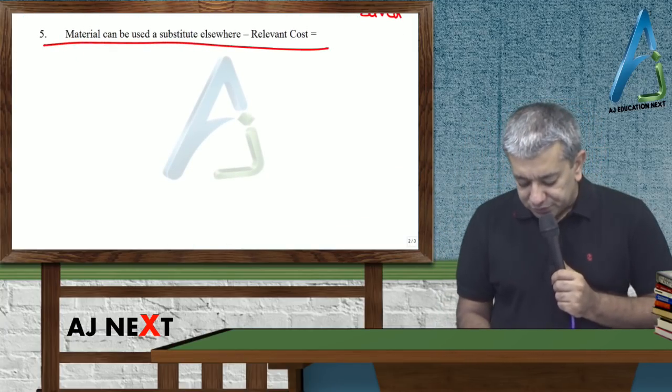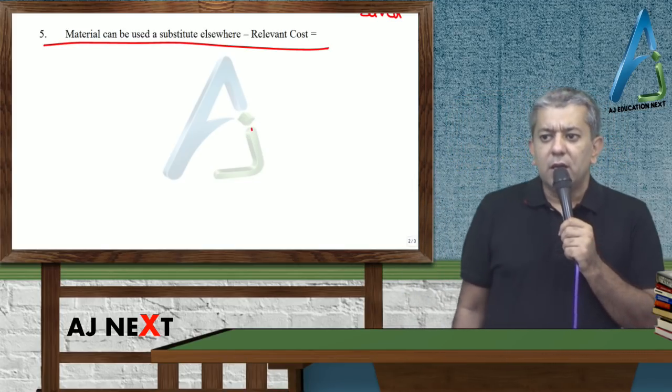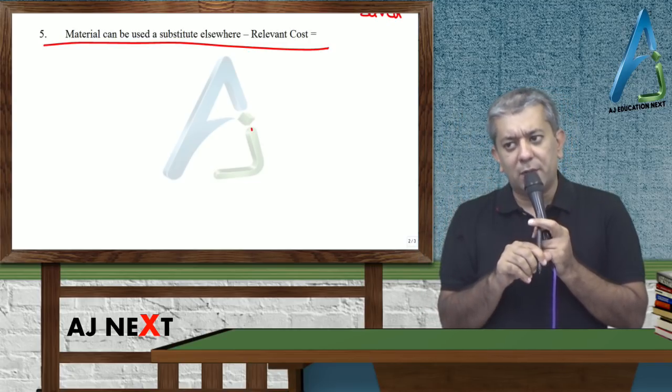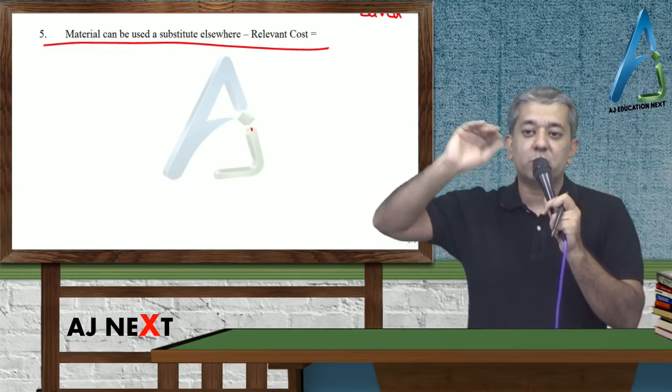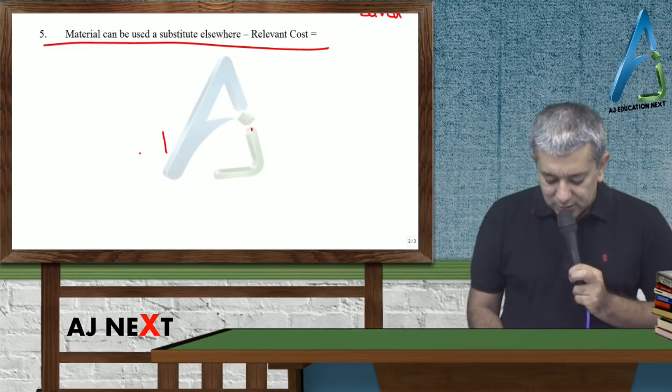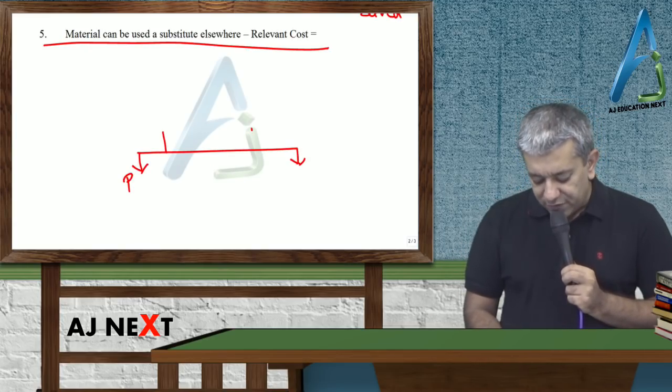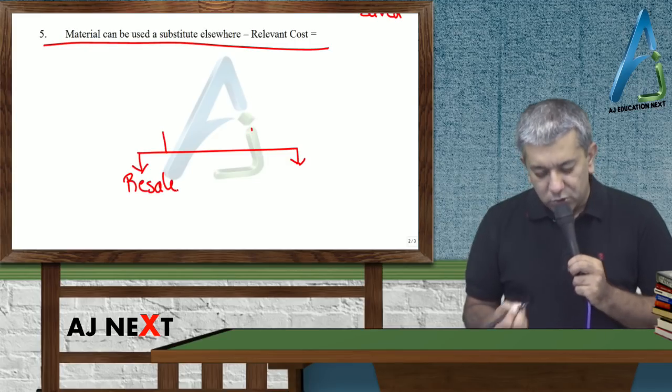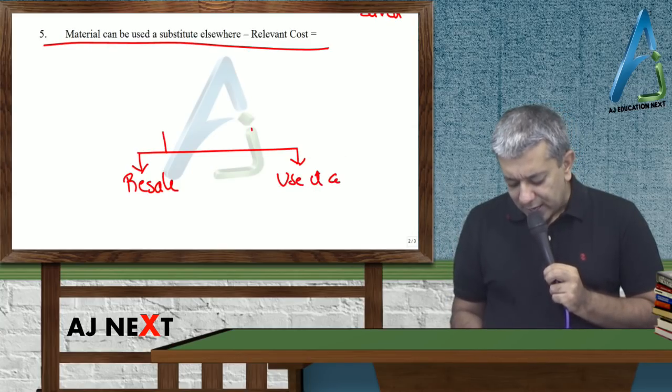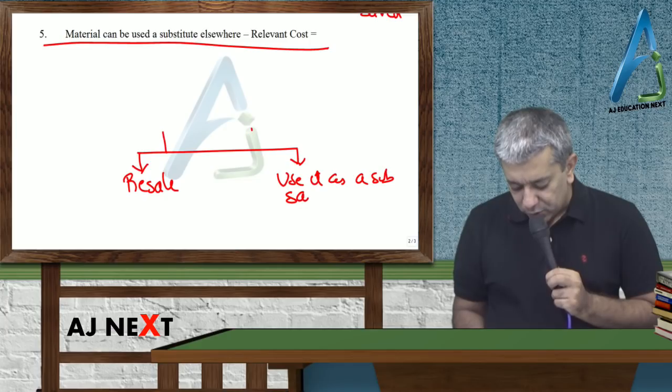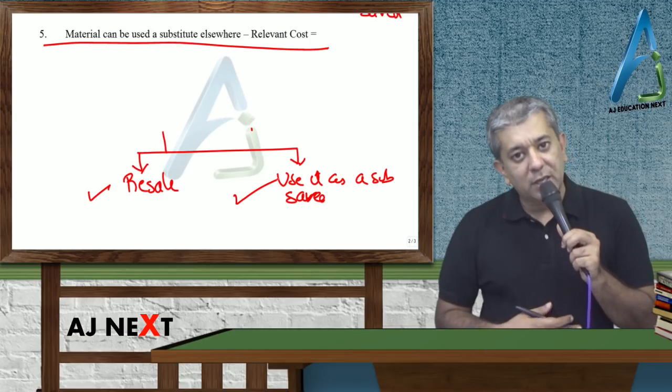Fifth, material can be used elsewhere. Sometimes it happens that suppose if an offer doesn't come, you have two options for material: either sell it here, or use it as a substitute elsewhere so you don't have to buy that other material. In such cases we do something like this. Sir, remember first - if the offer doesn't come, one option was to sell the raw material. Second option was sir, use it as a substitute. If you do that, you will save something. So that is also your income.